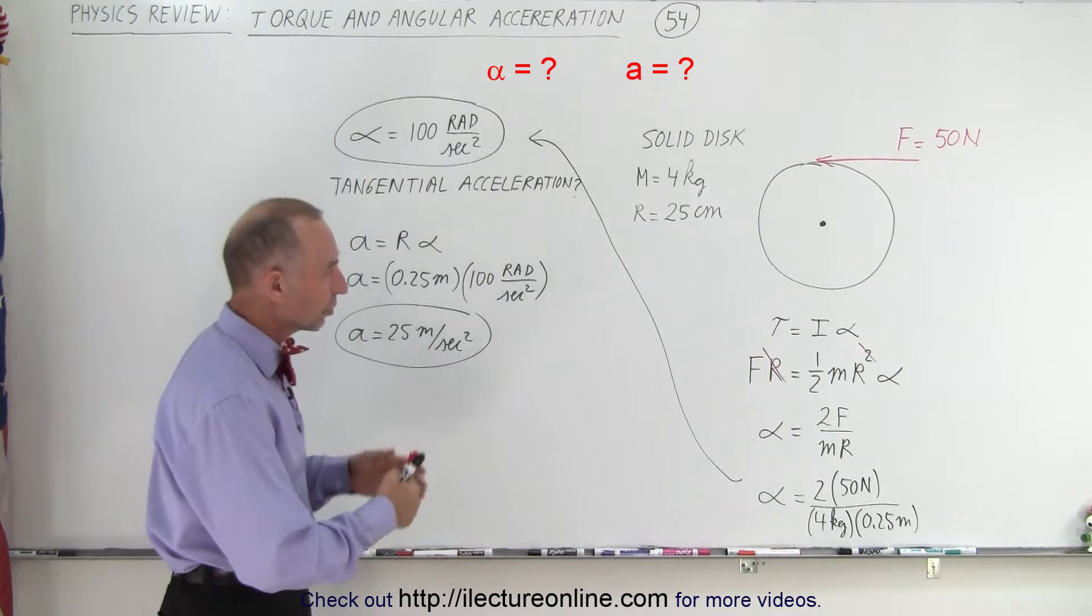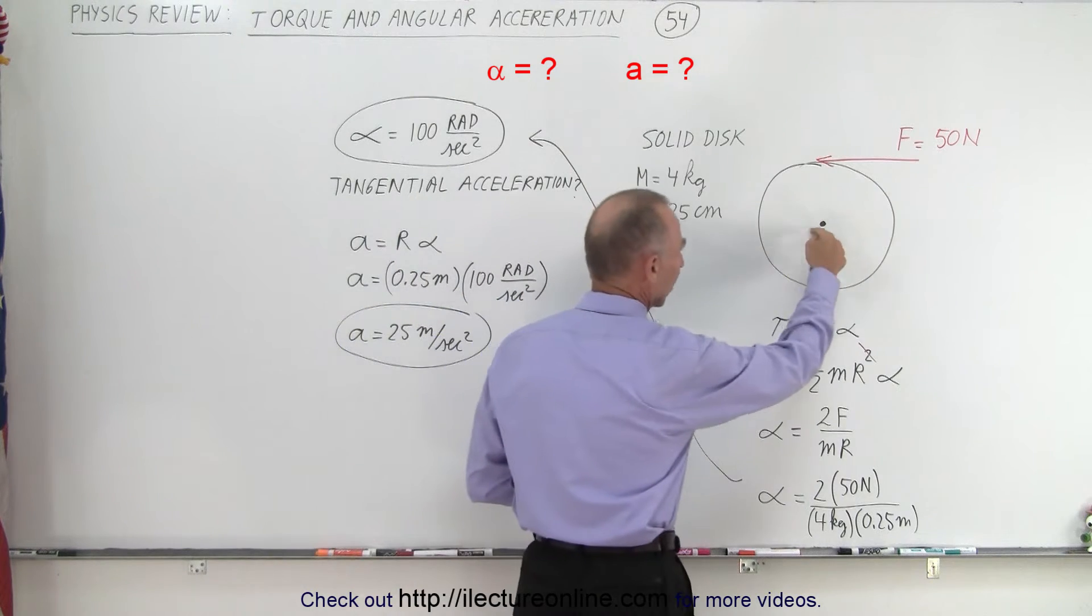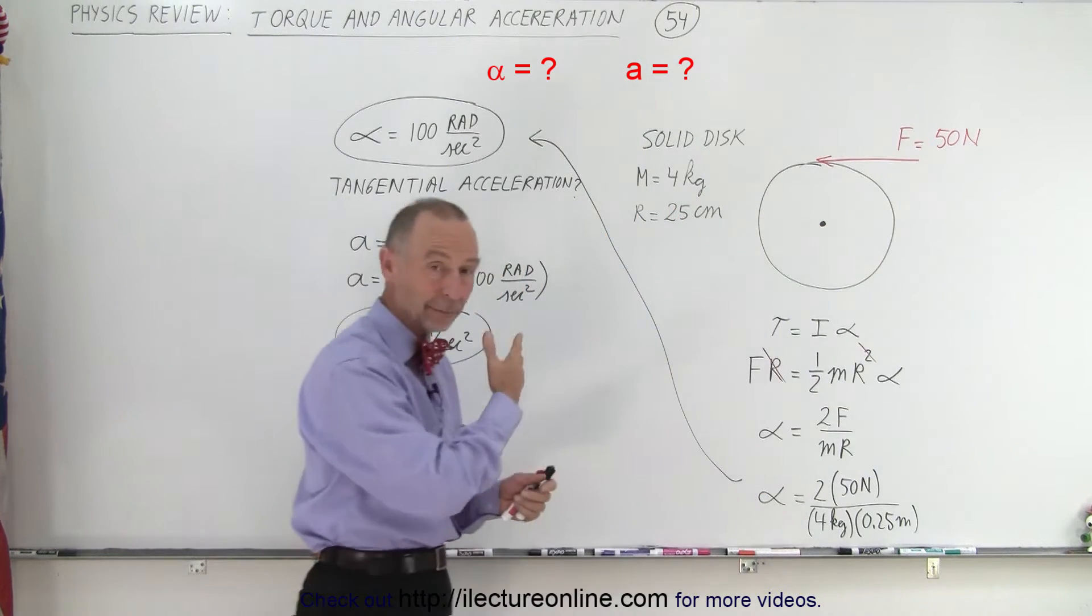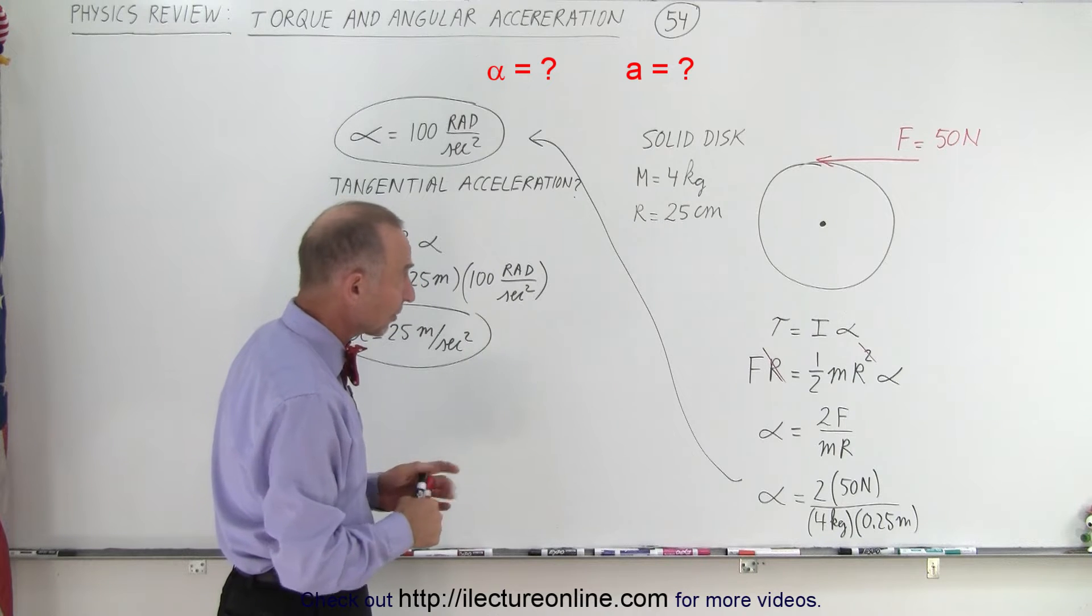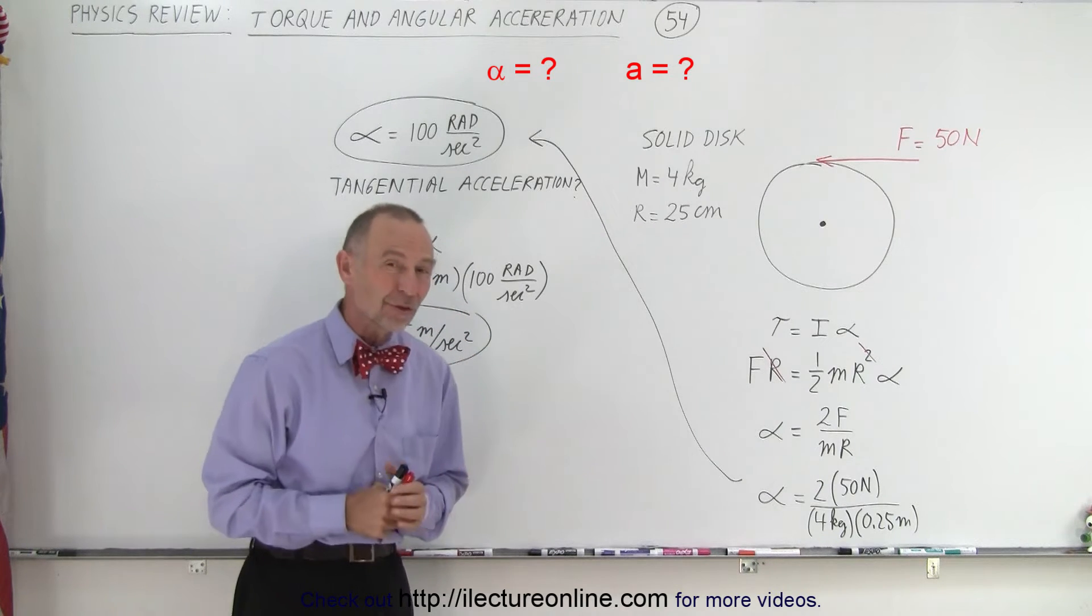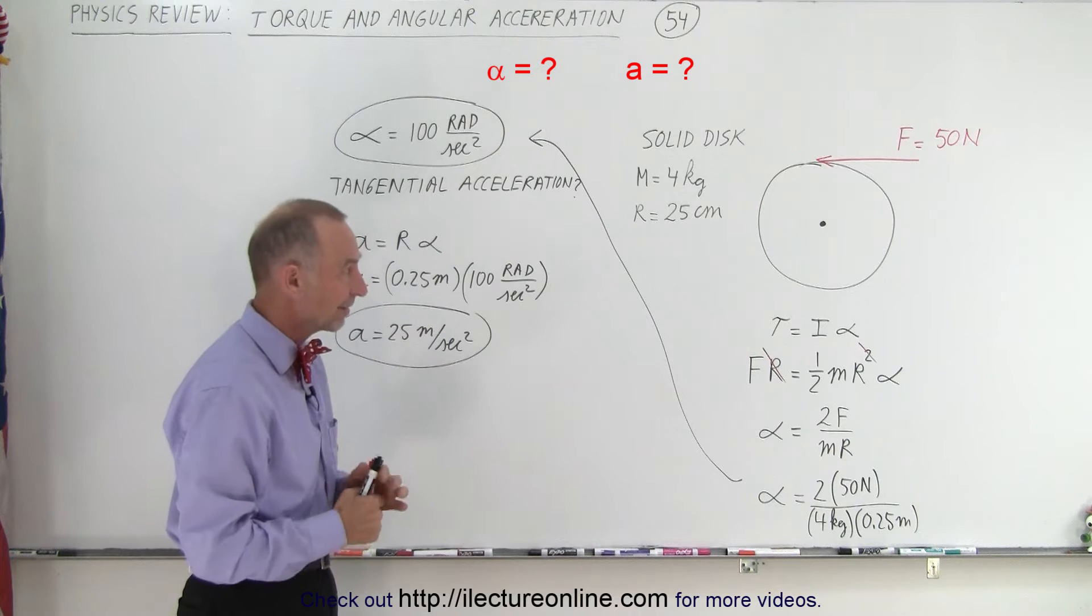So let's say we have a solid disk. It is attached at the center, able to rotate, but it cannot roll. The mass is 4 kilograms, the radius 25 centimeters, and a force of 50 Newtons acts tangentially along its edge.